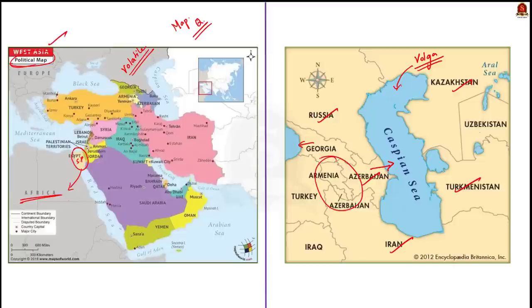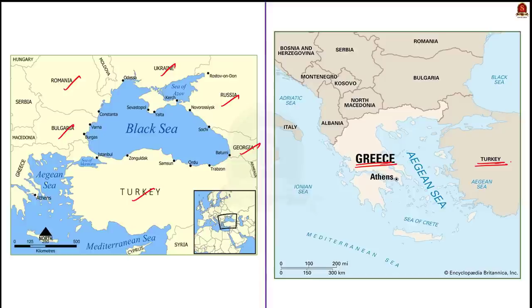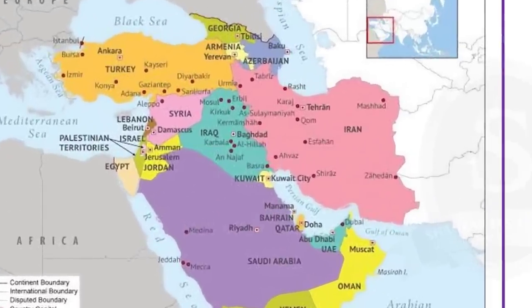Moving on to the Aegean Sea — this sea borders the countries of Greece and Turkey. Now let us take up the Mediterranean Sea. We will look at the countries of West Asia that have a Mediterranean coast. The countries are Turkey, Syria, Lebanon, Israel, Gaza Strip, and Egypt's Sinai Peninsula.